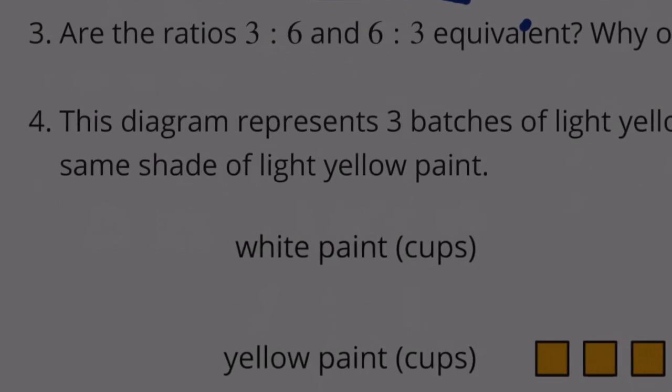Number 3: Are the ratios 3 to 6 and 6 to 3 equivalent? 3 to 6: 3 times 2 gets you to 6. But 6 times 2 would get you to 12, and this 3 is not a 12. Therefore, it's not an equivalent ratio.